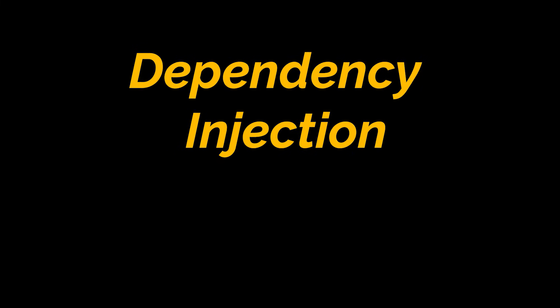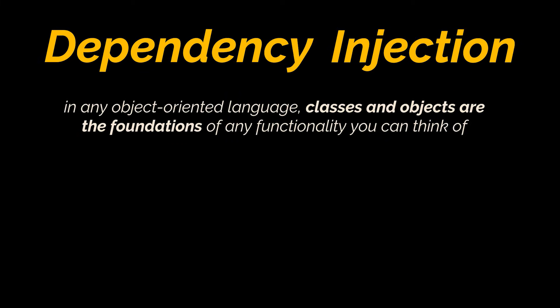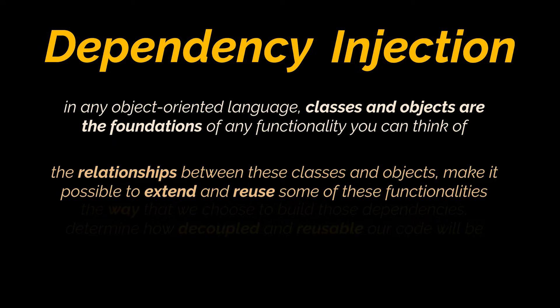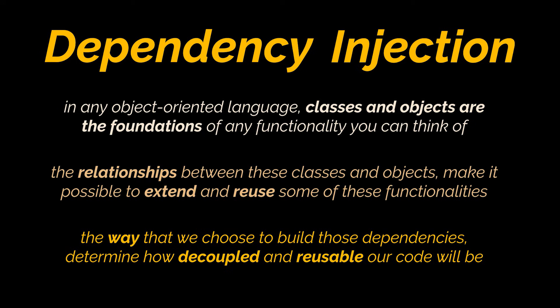You see, in any object-oriented language, classes and objects are the foundations of any functionality you can think of. Now the relationships between these classes and objects, like composition or inheritance, make it possible to extend and reuse some of these functionalities. However, there's a catch: the way that we choose to build those relationships, those dependencies, determine how decoupled and reusable our code will be.